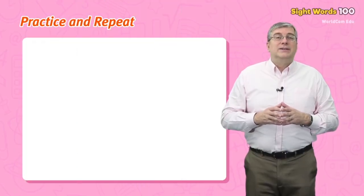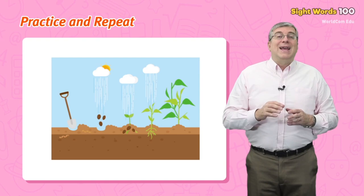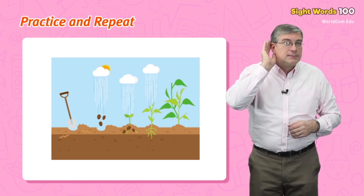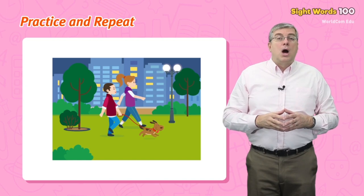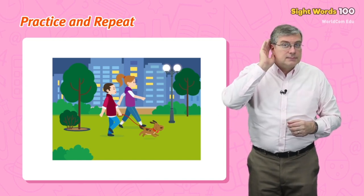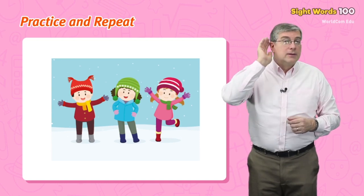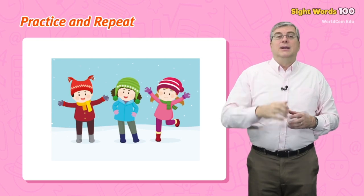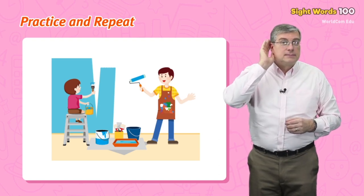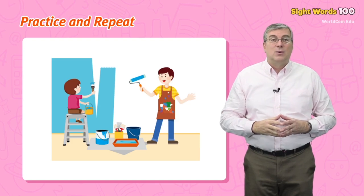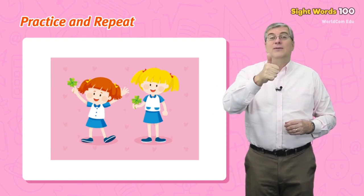Now it's time for practice and repeat. Repeat after me: rain — plants need rain to grow. Evening — we take a walk every evening. Clothes — we wear warm clothes. Paint — I paint a wall with my dad. Similar — they look quite similar. Very good everybody!